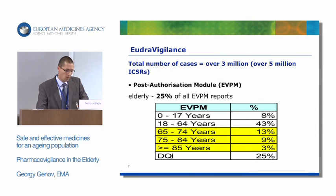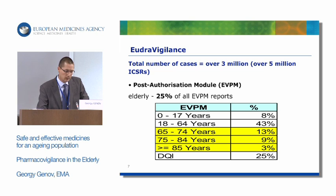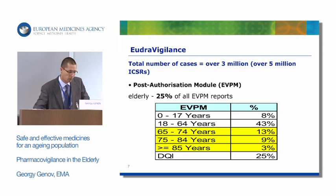All those reports put together give us about 3 million individual cases, and counting follow-up reports, that comes to over 5 million. In the post-authorization module, there is a significant percentage of reports that concern elderly patients — about 25%. There is also a significant number of reports for which we cannot identify the age, representing data quality issues that we need to address.